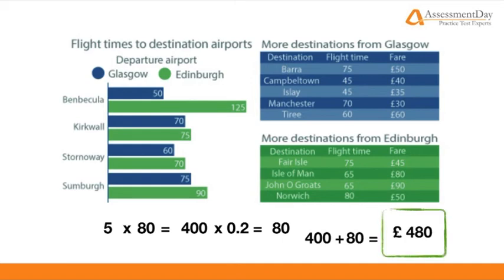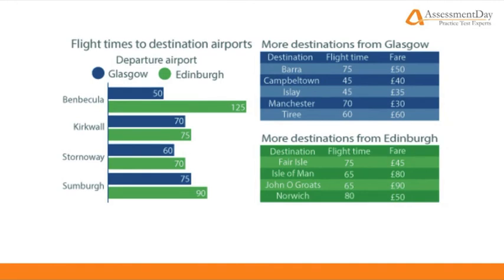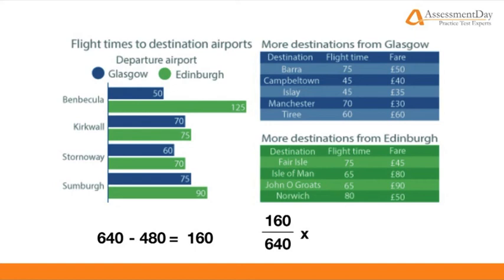Now that we have the costs of the two scenarios, we can easily calculate the difference: 640 minus 480 equals 160. Lastly, it needs to be expressed as a percentage of the first scenario, which as we've already found out is 640. Therefore our difference, 160 divided by 640 multiplied by 100 to convert to a percentage, equals 25, or 25%. And that is our answer.